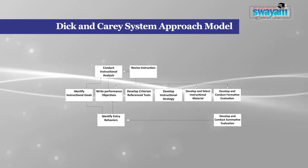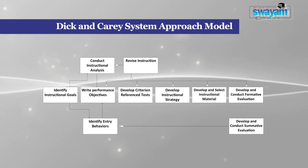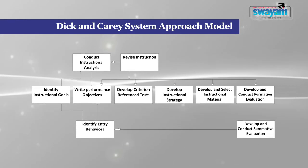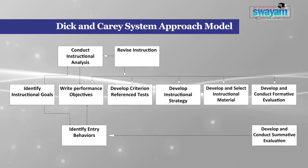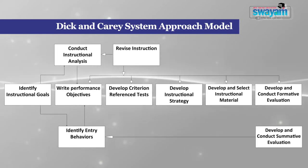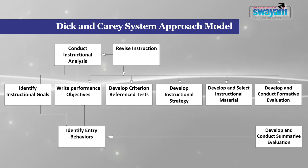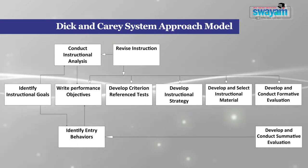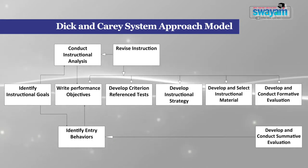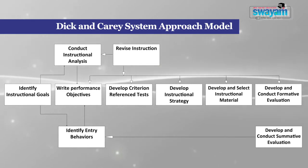As seen from the figure, one can identify the instructional goals and conduct instructional analysis. Identifying entry behavior from both these sources helps in writing performance objectives. After performance objectives, we develop a criteria-referenced test, develop instructional strategies, develop and select instructional material, develop and conduct formative evaluation, revise instruction, conduct summative evaluation, and then come back to revise the whole process.